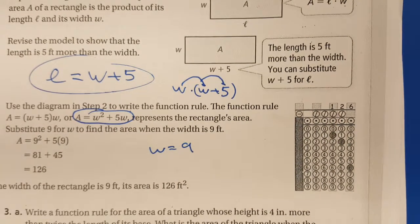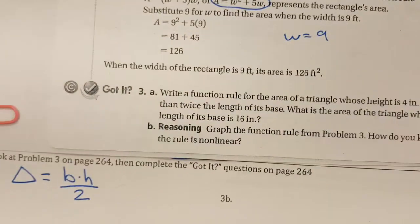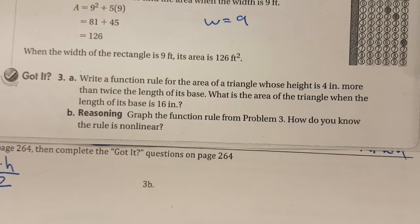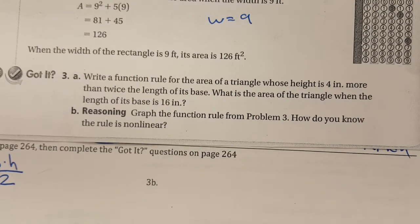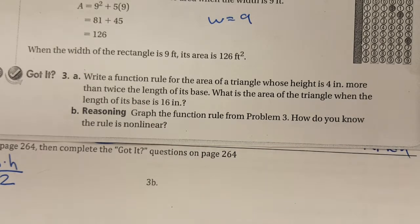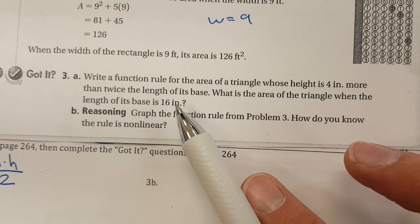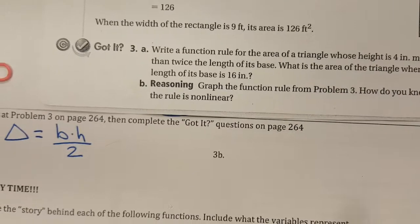So how do you put in 126 in a grid? 126, dot, dot, dot—yeah, okay, cool. So this is theirs. Here's the 'got it' question. I kind of started as soon as I read it. I was kind of like, 'Ooh, that's a good one.' So here we go: write a function rule for the area of a triangle whose height is 4 inches more than twice the length of its base. That sentence alone almost made my brain go crazy. What's the area of the triangle when the length of the base is 16 inches?